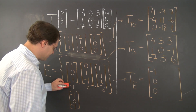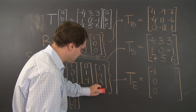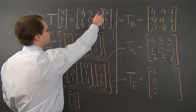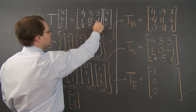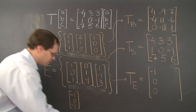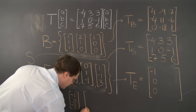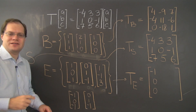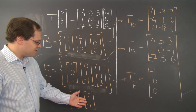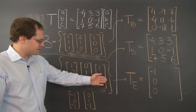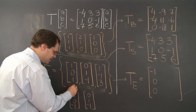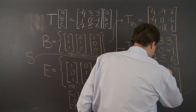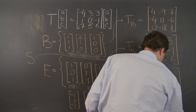Now for the second vector in the basis, which is also an eigenvector: (0, 1, -1). Applying the transformation gives (0, 1, -1). You can see it's an eigenvector corresponding to eigenvalue 1. It's completely straightforward to decompose this vector with respect to this basis — it's clearly (0, 1, 0). So (0, 1, 0) goes into this column.